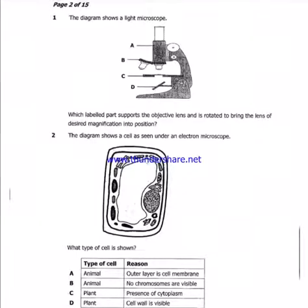Question 1 says: the diagram shows a light microscope. Which labeled part supports the objective lens and is rotated to bring the lens of desired magnification into position? This is the answer, because this is the objective lens, so it is supported by this.